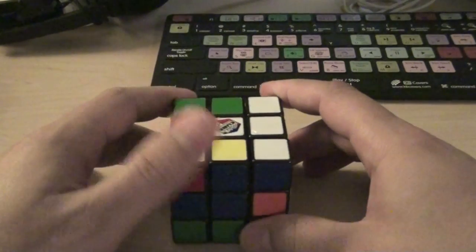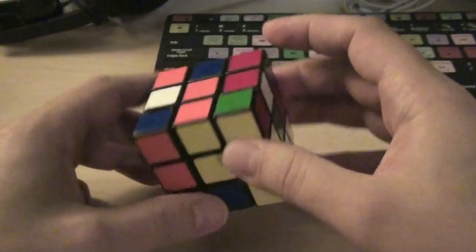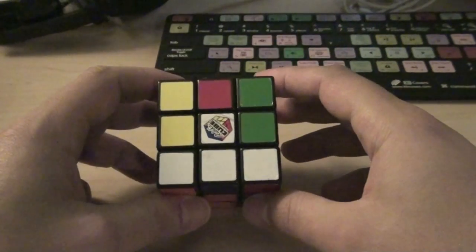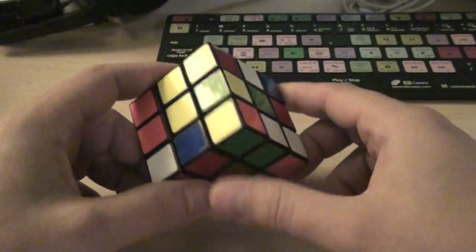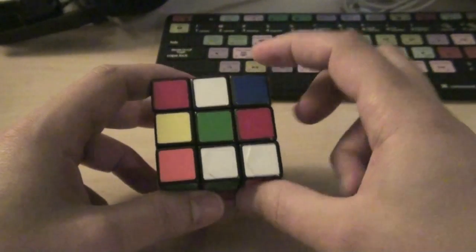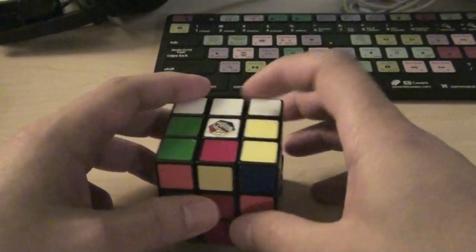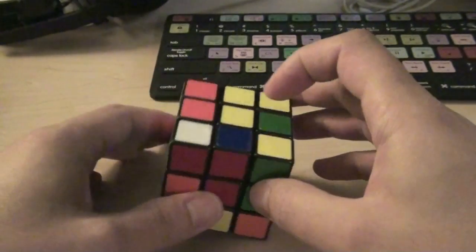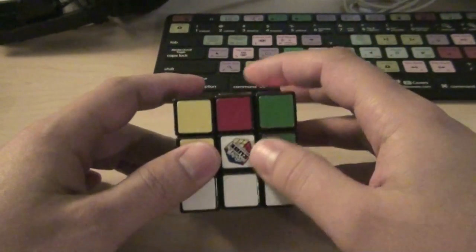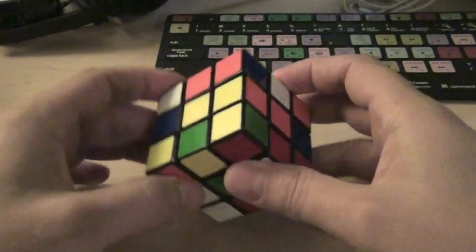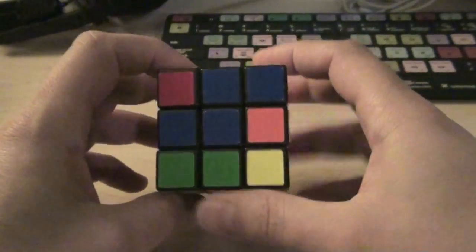So they always say the first thing you need to do is pick a color, right? I pick white just because it's the brightest, most obvious color on the cube itself. And they always say the one color that never changes is the ones in the center. These will always be white, this will always be blue, this will always be yellow, red, green, and orange. Okay, great, thanks for sharing. Now everybody knows that.